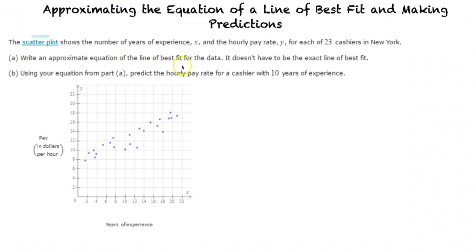Part A, write an approximate equation of the line of best fit for the data. It doesn't have to be the exact line of best fit. Part B, using your equation from part A, predict the hourly pay rate for a cashier with 10 years of experience.